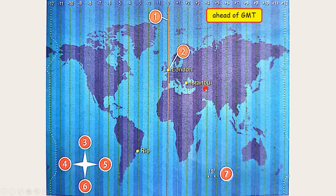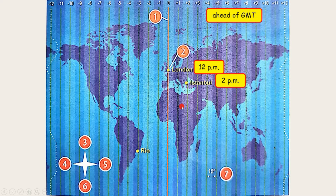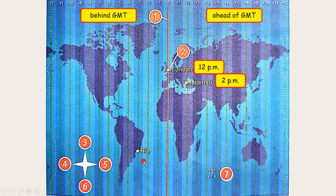For example, Istanbul is 30 degrees east of the prime meridian, so the time in Istanbul is GMT plus 2 — we have to add 2 hours. If the time in London is 12 p.m., the time in Istanbul is 2 p.m. On the other hand, places west of the prime meridian — this part of the map — are behind GMT; we have to subtract the hours. For example, Rio is 45 degrees west of the prime meridian, so the time in Rio is GMT minus 3. We have to subtract 3 hours. If it is 12 p.m. in London, the time in Rio should be 9 a.m.